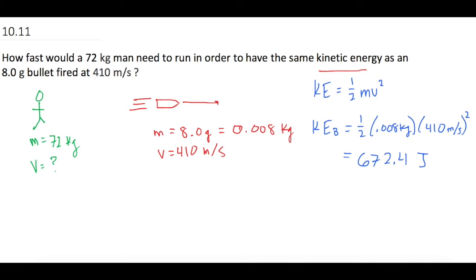Okay, so now we want to know what velocity this guy has to run to equal this 672.4. So we know that kinetic energy is going to have to equal 672.4 joules. And we want 1 half of his mass, which is 72 kilograms, times v squared.